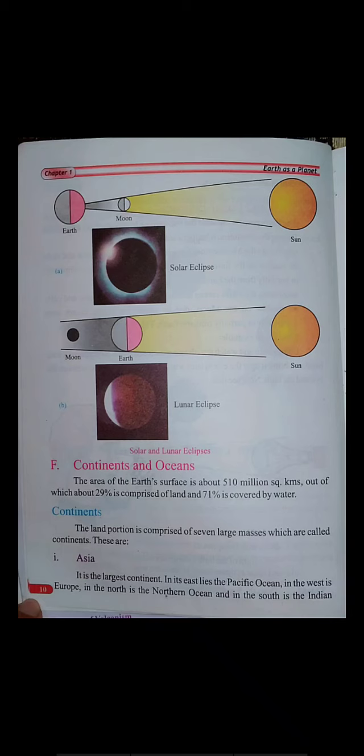Assalamualaikum class. This is another video lecture for sixth class of geography, reading page number 10: Continents and Oceans. The area of the earth's surface is about 510 million square kilometers, out of which about 29 percent is comprised of land and 71 percent is covered by water.